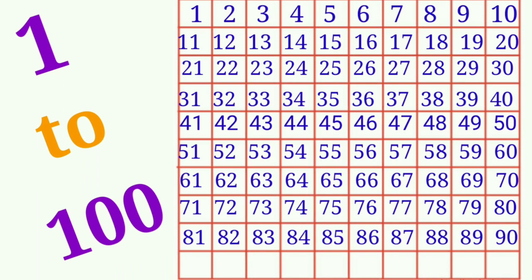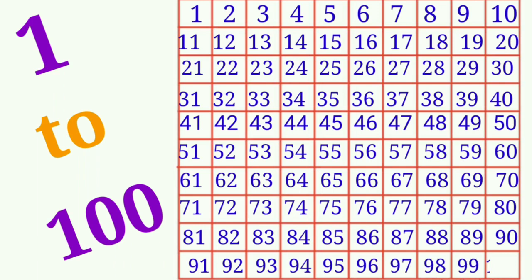And the next row children: 91, 92, 93, 94, 95, 96, 97, 98, 99, 100.